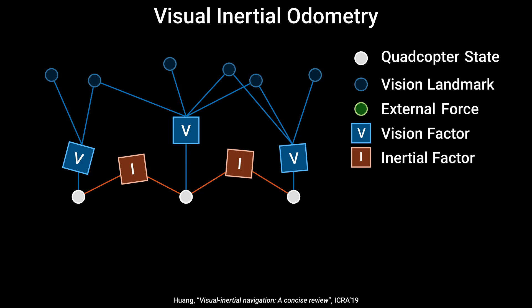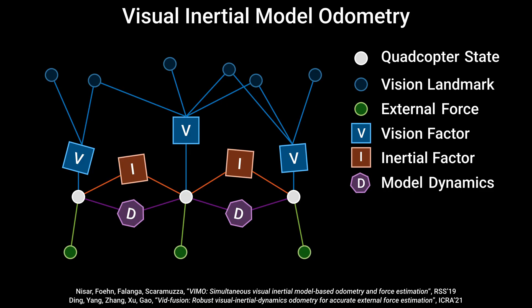Visual Inertial Models extend the traditional VIO framework by incorporating a motion prior based on quadrotor dynamics. While these state-of-the-art systems perform well in many scenarios, their accuracy degrades in the presence of inaccurate vehicle models or persistent external disturbances such as wind, due to the simplified assumptions in the dynamics model.